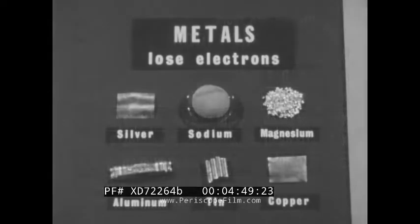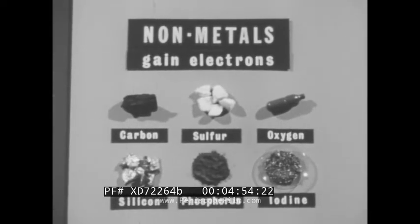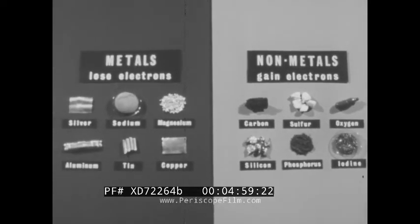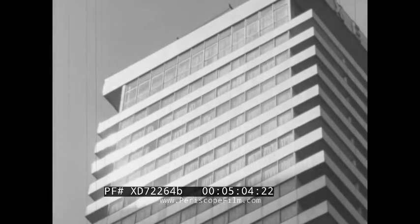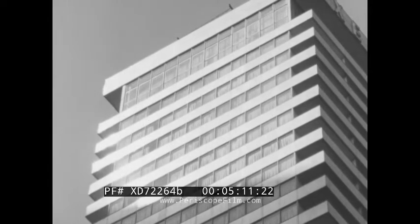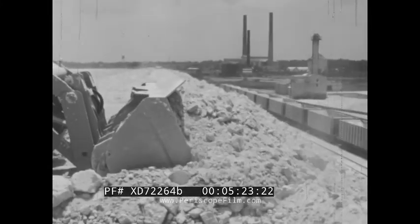Now, remembering that metals tend to lose electrons and non-metals tend to gain or share them, we can go on to explain the physical and chemical differences between metals and non-metals. One physical property we can notice in the aluminum panels on this building is that they have a luster or shine to them. Metallic luster is a physical property of all metals. Non-metals, like sulfur, do not have a metallic luster.